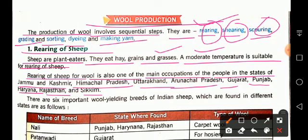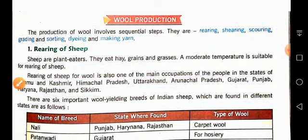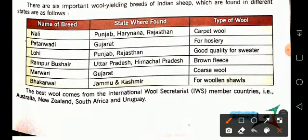There are six important wool-yielding breeds of Indian sheep found in different states, as shown in this table. First is Nali, which is found in Punjab, Haryana, and Rajasthan — from this breed, carpet wool is obtained, which is used to make carpets. Next is Bhakarwal, found in Gujarat, from which coarse woolen clothes are made.